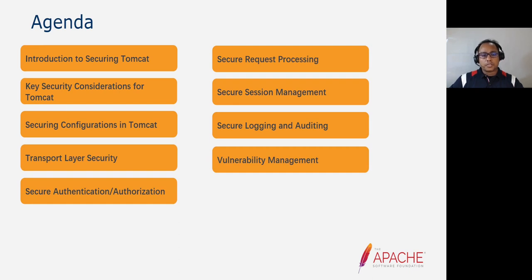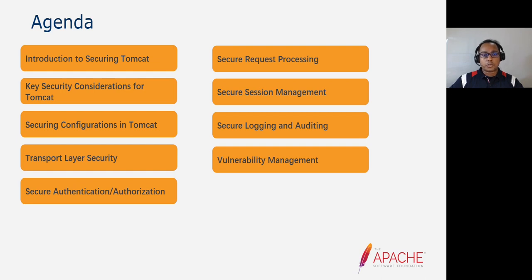Let me quickly move to the agenda of this session. My objective is to take a look at some of the important areas for securing Tomcat in a production or enterprise level web application setup. I will start with an introduction on key areas to be considered, then go through securing configurations, transport layer security, access controls, inbound request processing using valves and filters, session management, secure logging, vulnerability, and patch management for Tomcat.